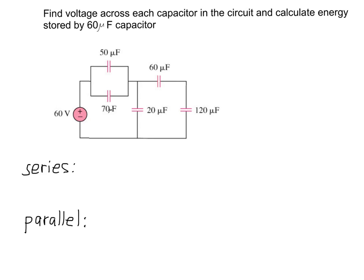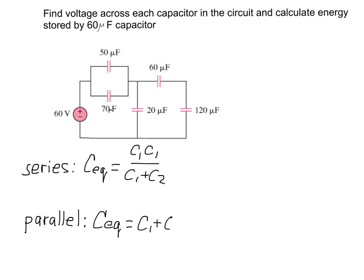It's easy to remember that we'll be using the opposite equations compared to resistors. So if you have two capacitors connected in series, the equivalent capacitance is C_eq = (C1 × C2) / (C1 + C2), and for capacitors in parallel, the equivalent capacitance is the sum of all capacitances — C1 + C2.